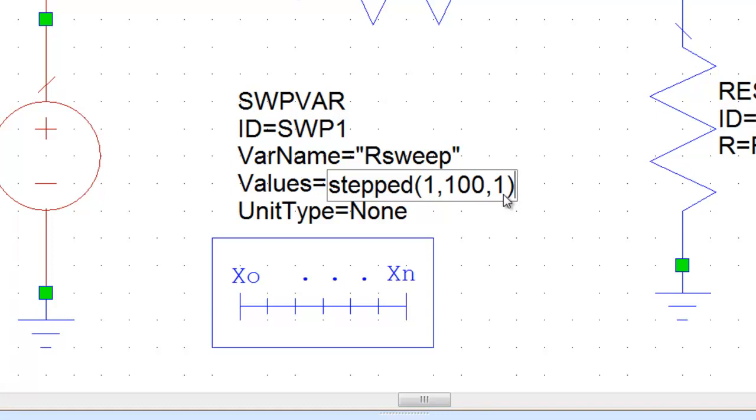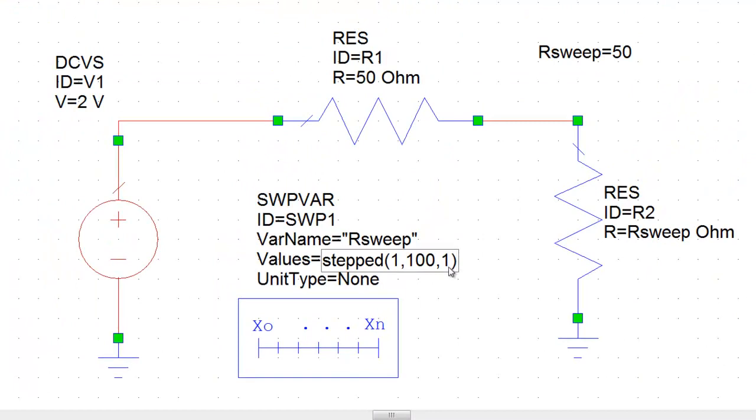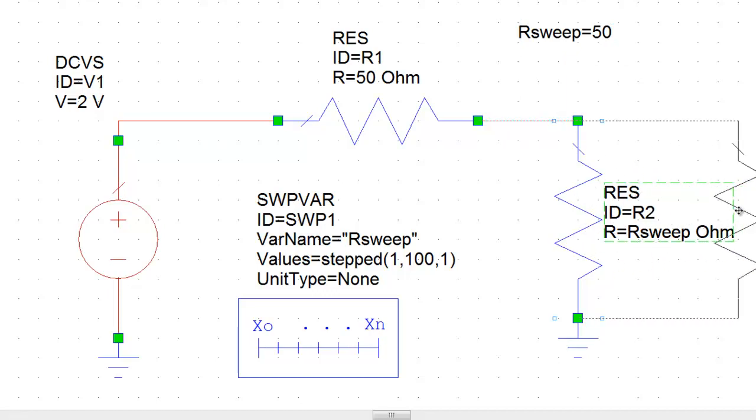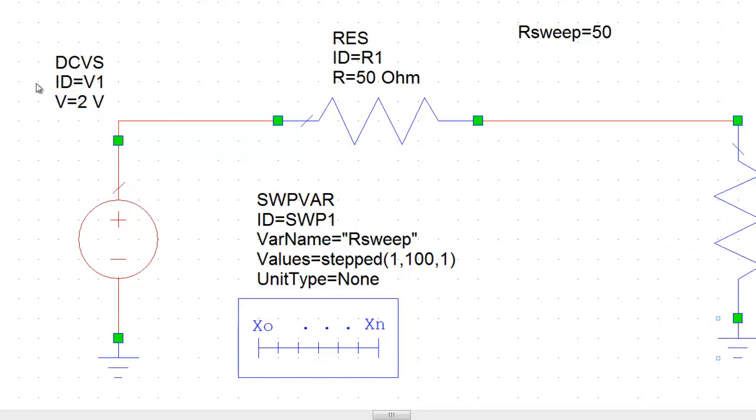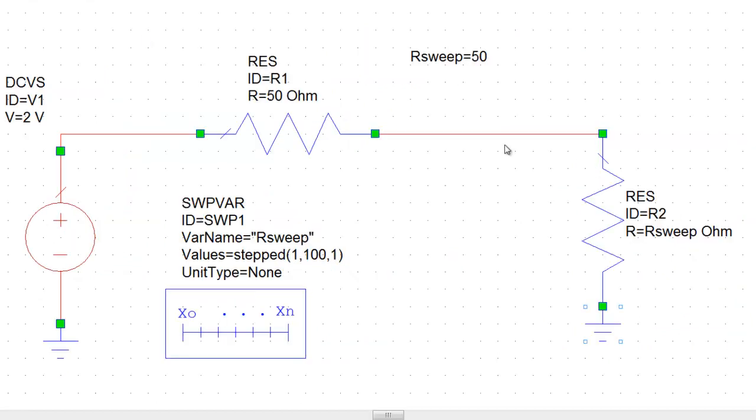And at each value we want to work out what the power dissipation is in the load resistor and see how that is related to the value of the resistor. So I'm just going to move a few things around now to make space for a power meter. So I'll move this resistor out a little bit. Now press the view all icon to resize the schematic.